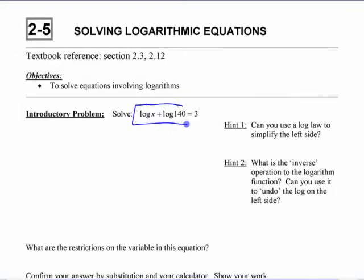Hopefully by now we're starting to feel more comfortable with logarithm laws and if you have two individual logarithms added, you can combine them together. So log x plus log 40 can become log of 140x.